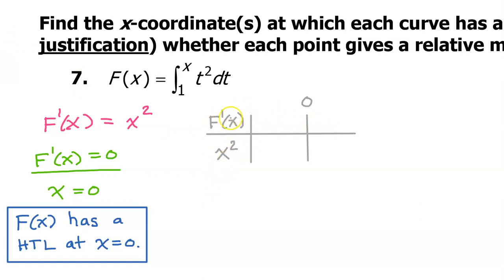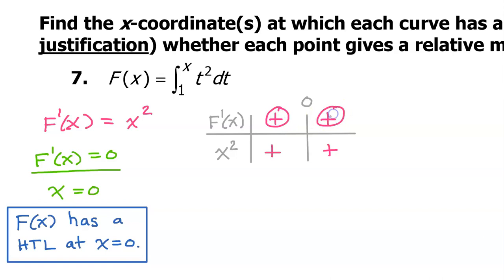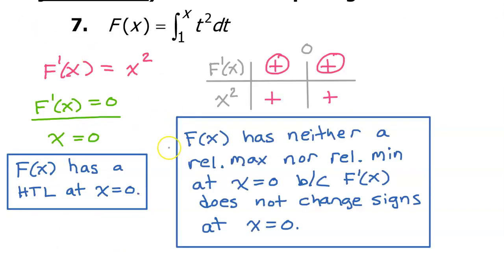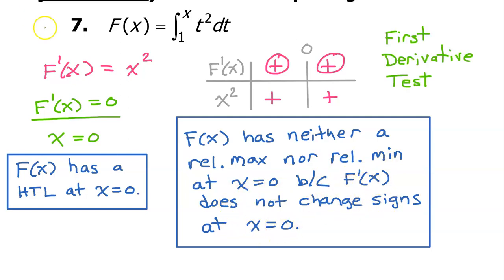Let's make a sign chart and see where capital F prime changes signs. There will only be one row, and that's for x squared. x squared will always be positive, which means that capital F prime is positive in both intervals. We can tell that capital F of x has neither a relative max nor a relative min at x equals zero because capital F prime does not change signs at x equals zero. This was your first derivative test.